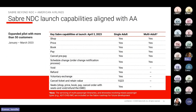Here we can see Sabre's NDC launch capabilities and how they are aligned with American Airlines. Sabre has the ability to shop, price, book, and pay for single adult as well as multi-adult offers and orders. For single adult offer and orders, Sabre also has the ability to service those orders — meaning void, refund, process voluntary exchanges, and cancel and retain ticket value. Servicing capabilities for multi-adult offers and orders are currently being developed and scheduled to roll out later this year.